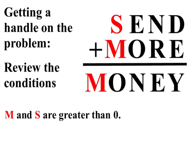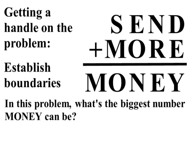In this problem, what's the biggest number that the sum money can be? Well, the biggest four-digit number period is 9,999.